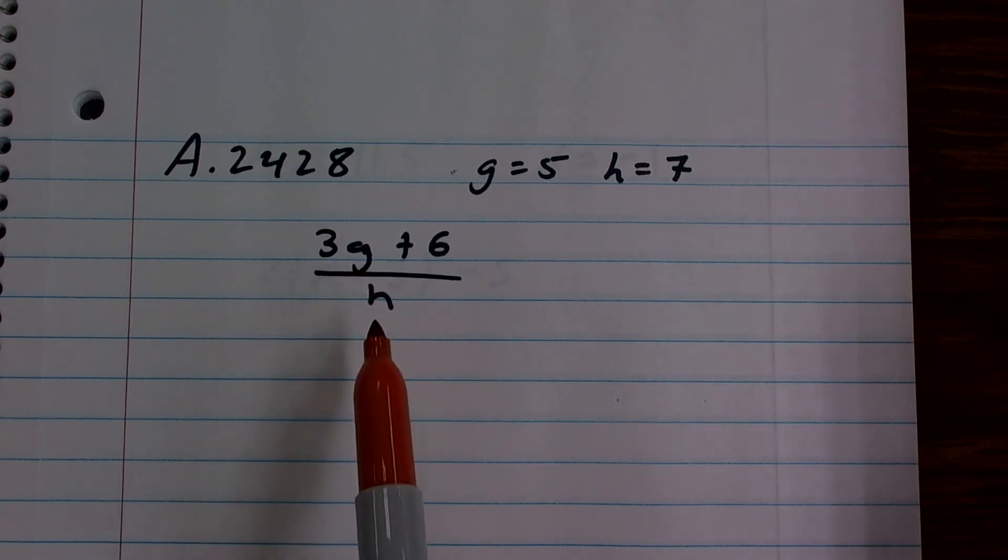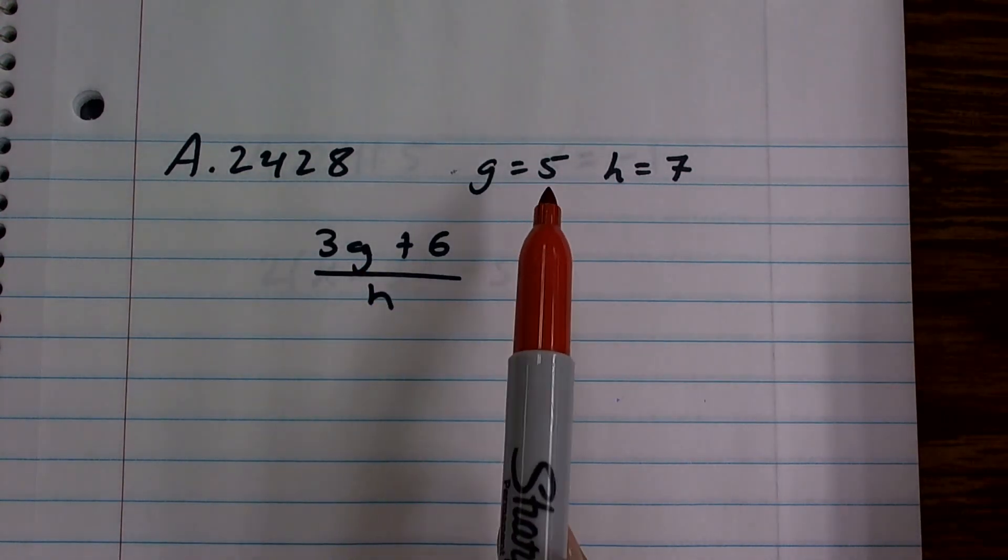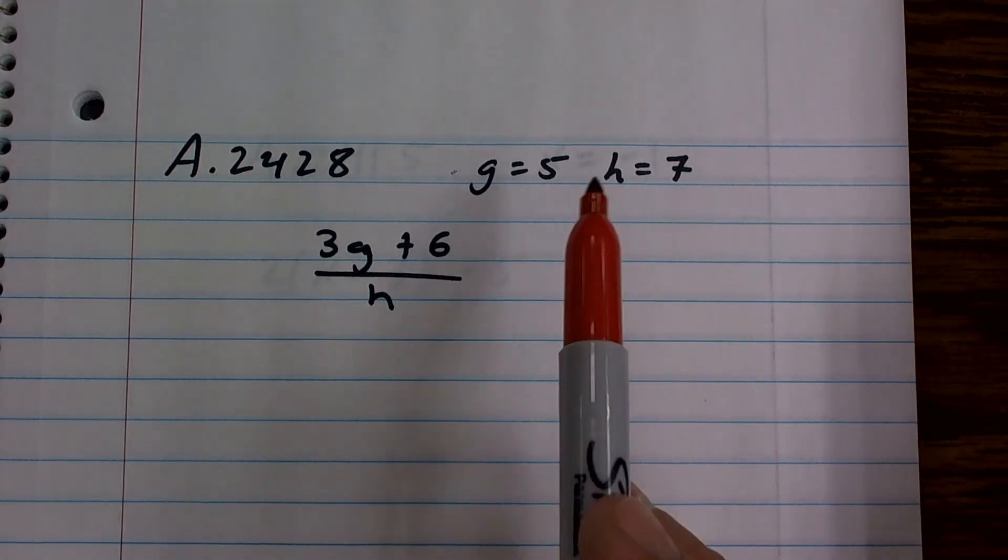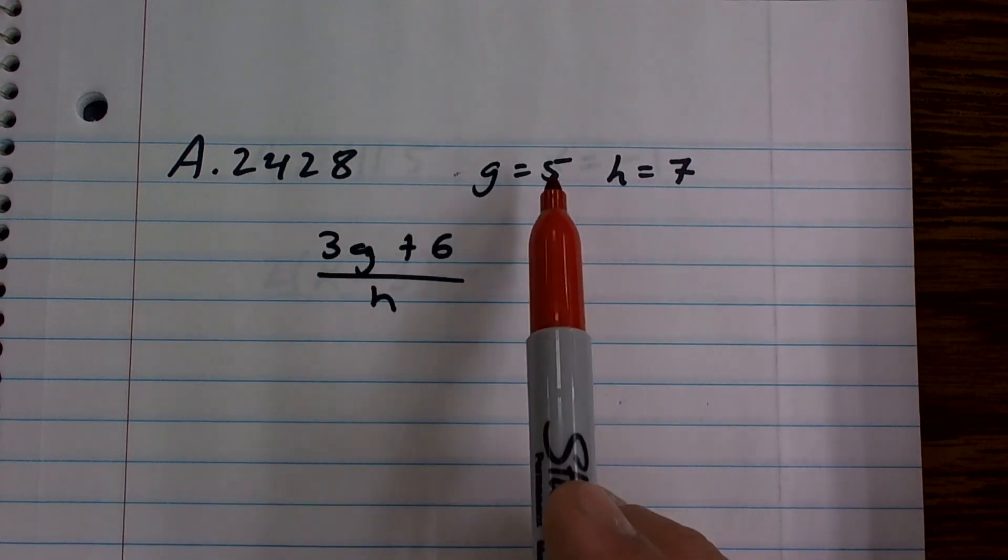Well, luckily for g and h, we know their value. We say g equals 5, h equals 7. So when we want to evaluate this expression, all we simply need to do now is just plug in the values for our unknown variables. Well, our unknown variables aren't unknown anymore.